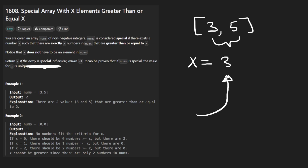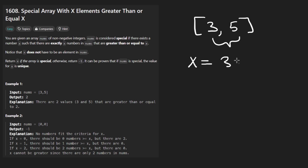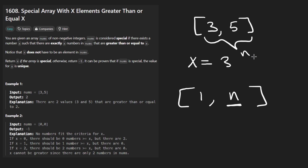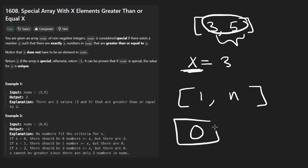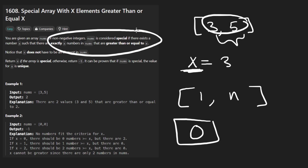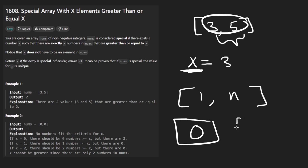Notice that there's only going to be one possible special number. The solution set has to be in the range one through n, where n is the size of the input array, because there has to be that many elements greater than or equal to whatever element we end up picking. We can't have zero because we are given a non-empty array, so we don't have to worry about that.